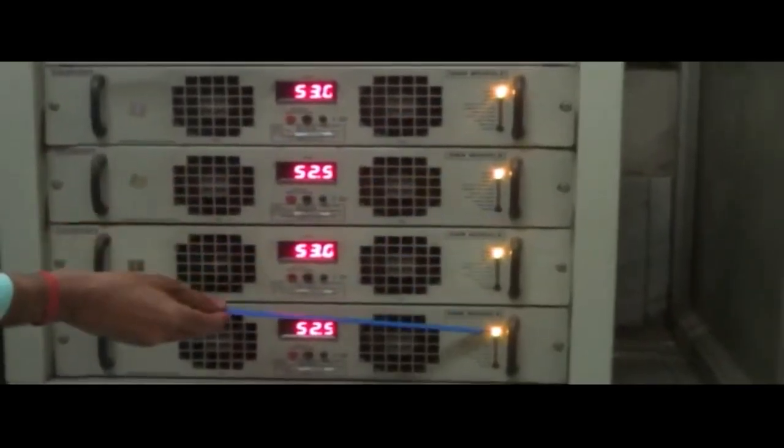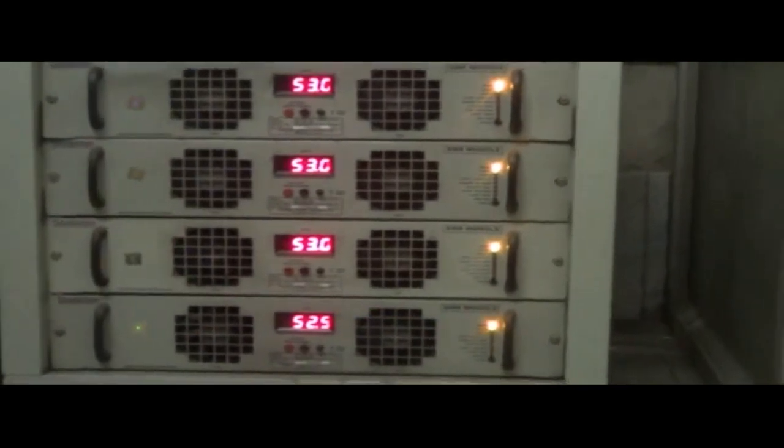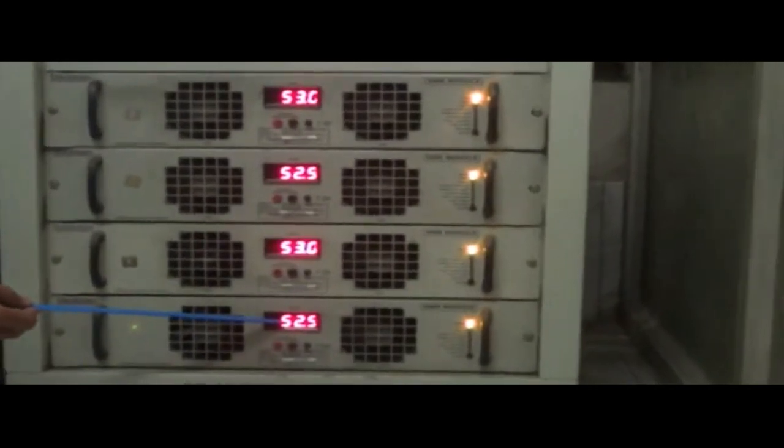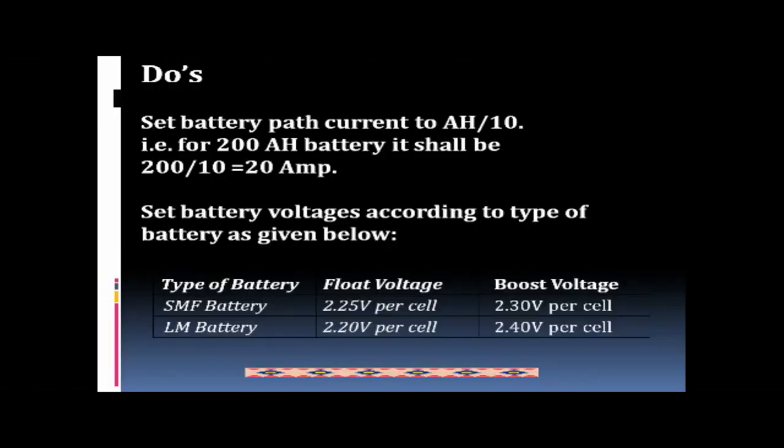Do's: Keep all the modules in on position. Set equal voltage in all modules for proper current sharing. Set battery path current to AH/10. Set battery voltages according to type of battery as given below. Type of battery: SMF battery, float voltage 2.25 volts per cell, boost voltage 2.30 volts per cell.